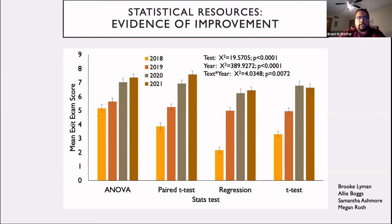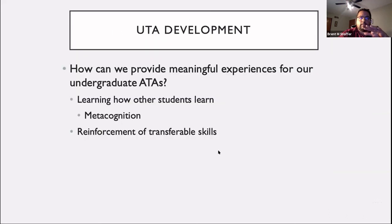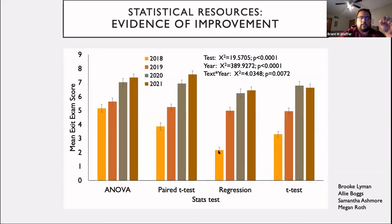There's also significant variation depending on which stats test students were given, and that tells us as educators which areas need improvement. For example, in 2018, regression analysis was by far the lowest. I knew why that was the case, but this showed me quantifiably that it was an area to tackle. So I had ATAs help me specifically address regression analysis, and you can see a dramatic improvement in that score from 2018 to 2019.